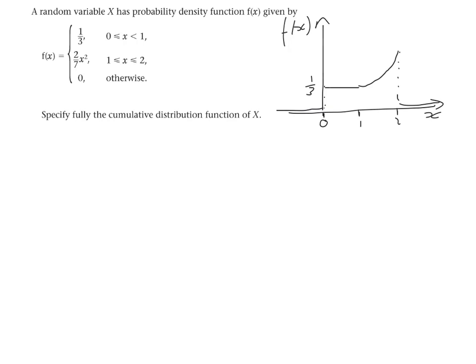To do this, we need to integrate each function separately. Starting with the first function — call it part A — we integrate between our lowest limit of 0 and x. The function is one third. Integrating gives x/3, evaluated between 0 and x. Substituting in: x gives x/3, and 0 gives 0. So our first part for A is x/3.